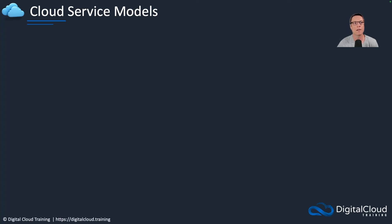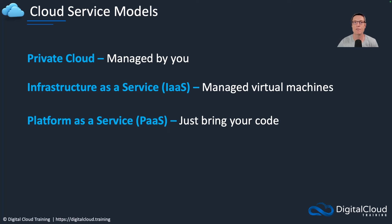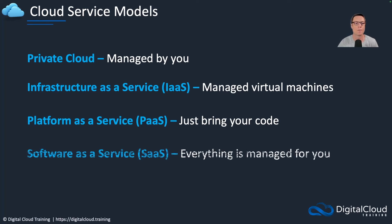There are a few different service models in the cloud. The first is private cloud — that's where you build it yourself, with all that capital expenditure and full management responsibility. Then we have Infrastructure as a Service, or IaaS — essentially managed virtual machines, where everything underneath the operating system is managed for you. Then we've got Platform as a Service, which is another level up with less management overhead — you just bring your code. And lastly, Software as a Service, where everything is managed for you. Going back to Salesforce.com or email services like Gmail — that's a SaaS service — everything is managed for you.